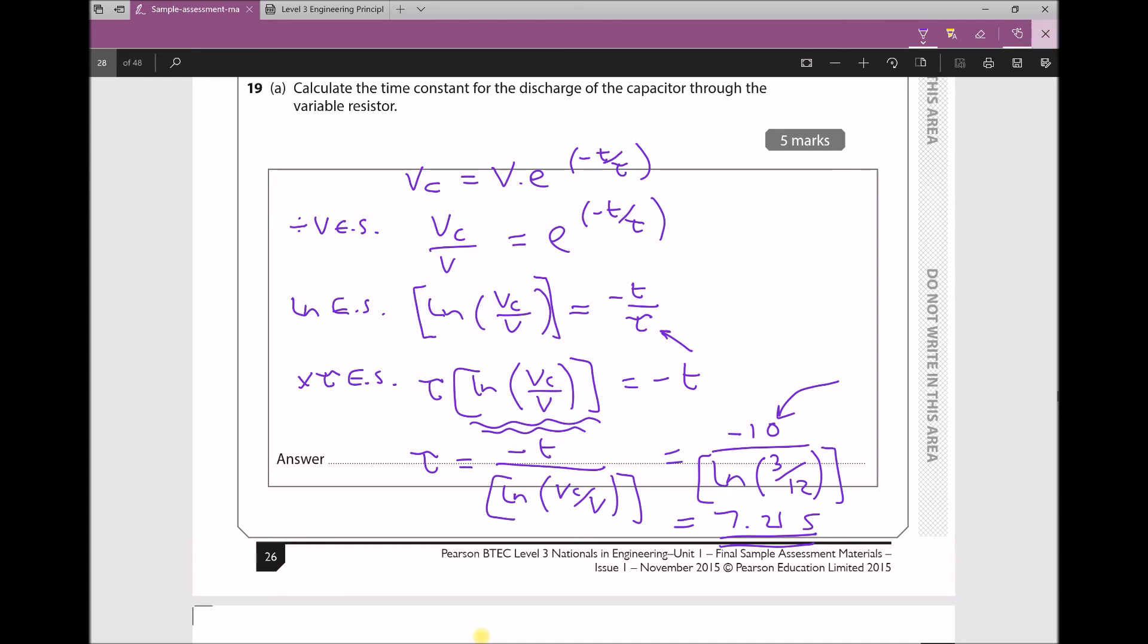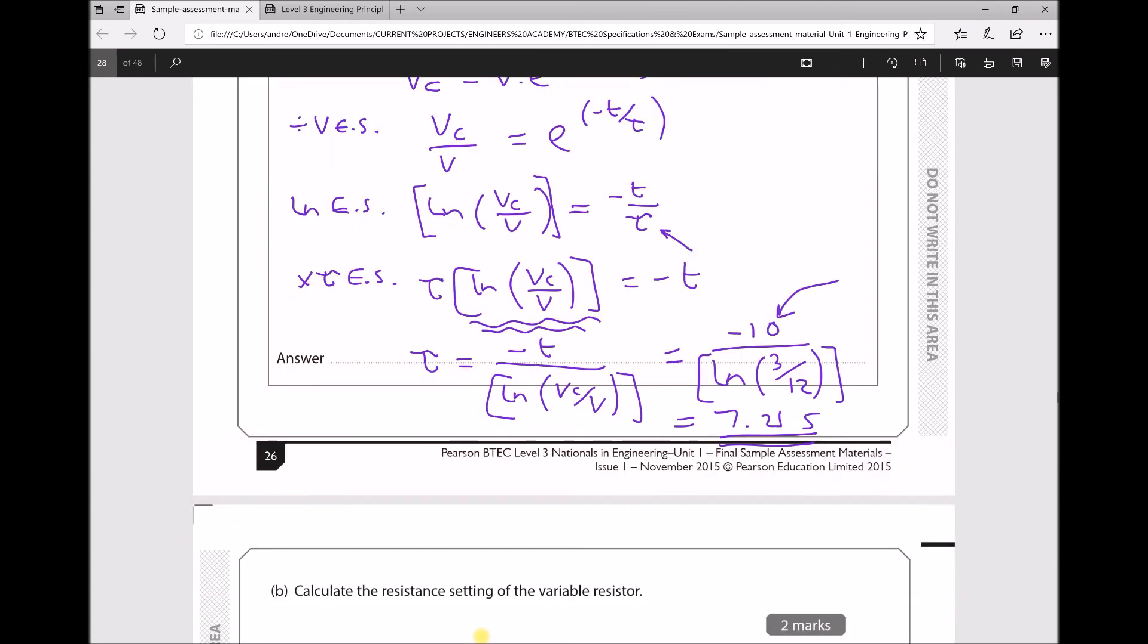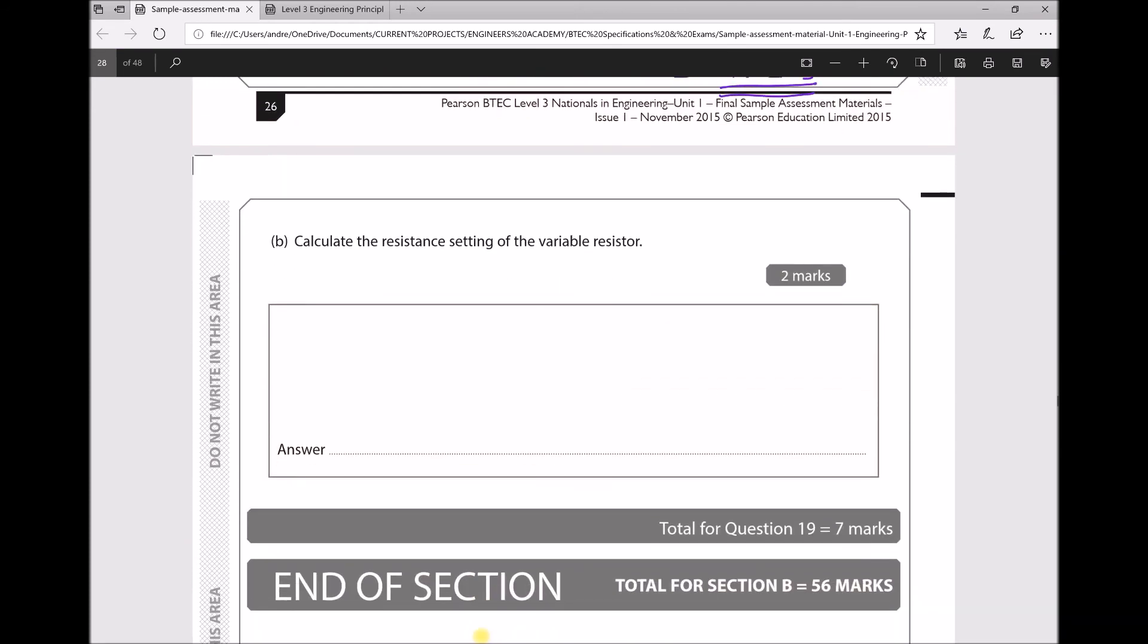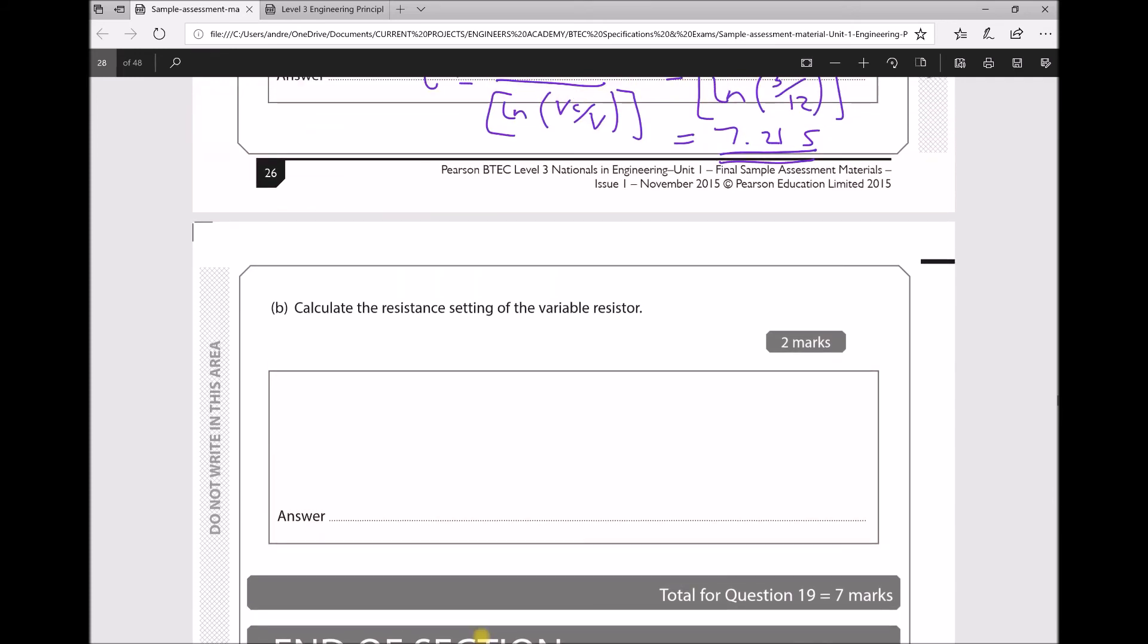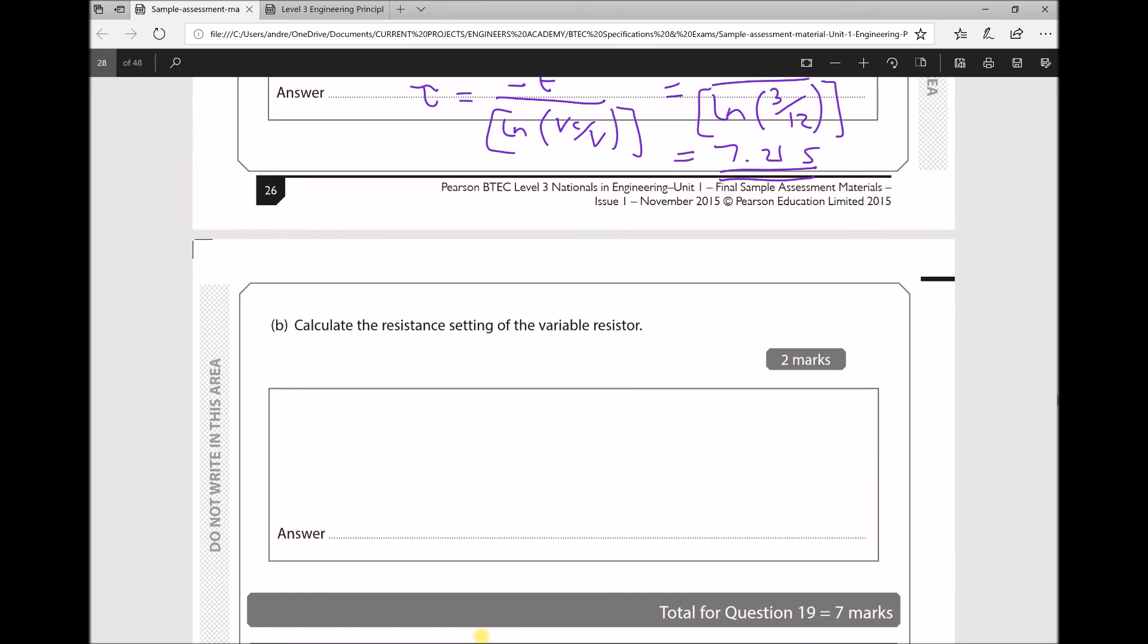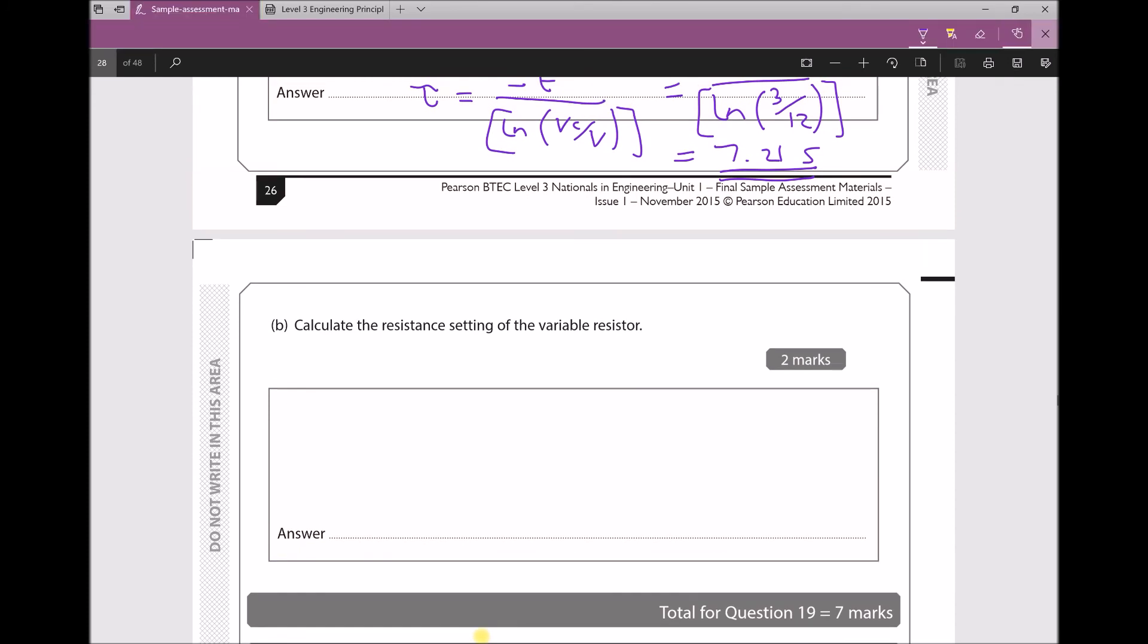Let's move on and look at part B. Part B asks us to calculate the resistance setting of the variable resistor. Assuming that our time constant is correct at 7.21, we have a relatively straightforward equation now, because tau equals the resistance times the capacitance. Therefore, the resistance is the time constant divided by the capacitance.